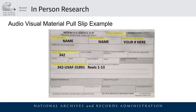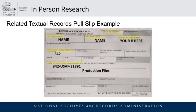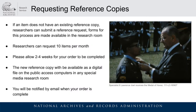If an item you are requesting is a sound format, that would also be helpful for staff to know — you can include additional information in the large bottom section of the pull slip. When requesting related paper records such as production files, shot cards, or any related textual records, you will still need to include the item's local identification number but also need to include the type of textual records you need.